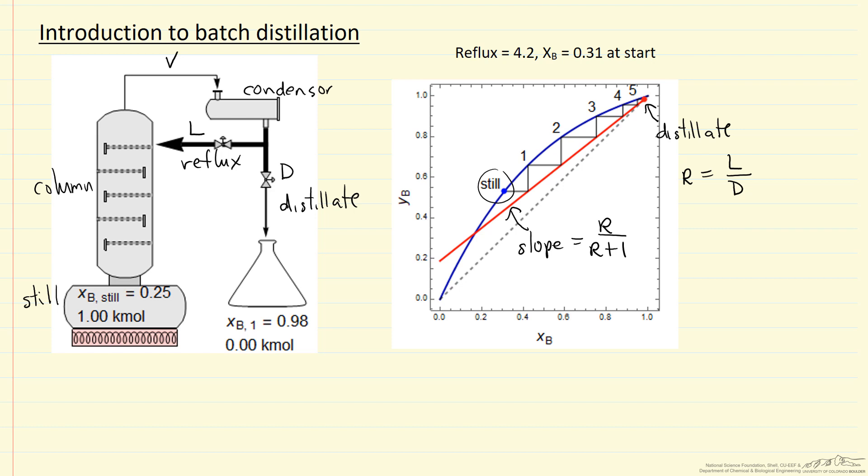And for pharmaceuticals or for food this could be important. So the typical way that this would be run is we start out where we close this valve and we completely reflux at the start and let the system get to equilibrium. This allows us to get the best separation. Then we open the valve and start collecting.